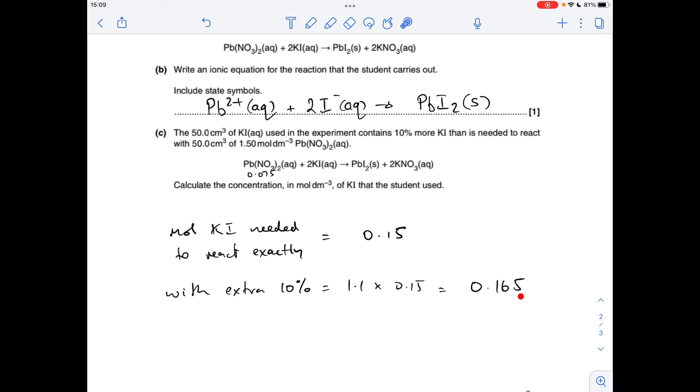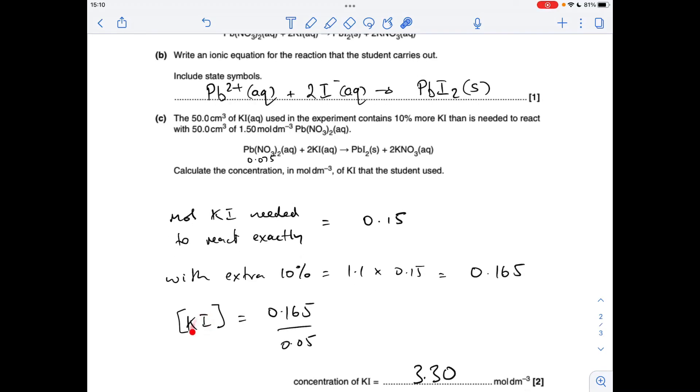So that's how many moles we'd need of the KI to have effectively 110% worth of moles. So that means the concentration of the KI solution needs to be the moles divided by the volume. Remember we use 50 centimeters cubed so that comes out with 3.30 moles per decimeters cubed.